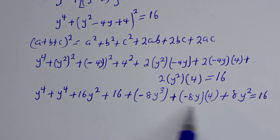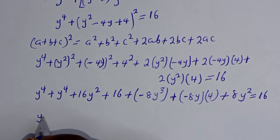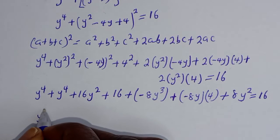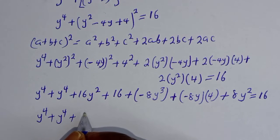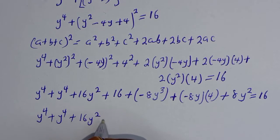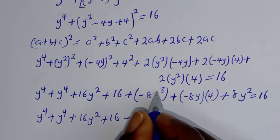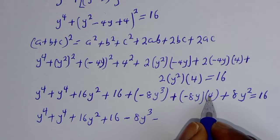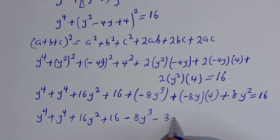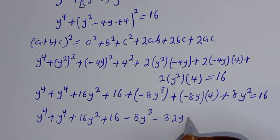Collecting all terms: y⁴ plus y⁴ plus 16y² plus 16 minus 8y³ plus 8y² gives us 2y⁴ minus 8y³ plus 24y² minus 32y plus 16, and the whole expression factored out gives 2y times (y³ minus 4y² plus 12y minus 16) equals 16.